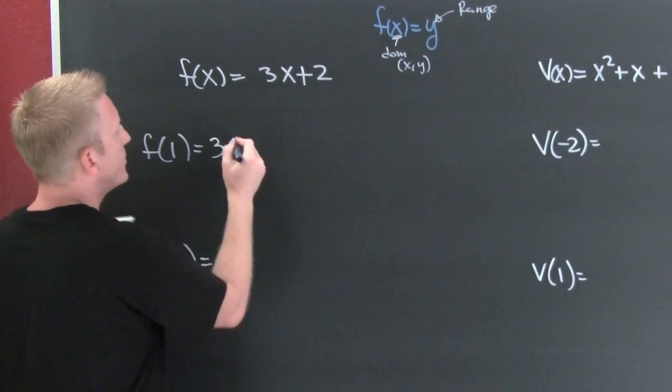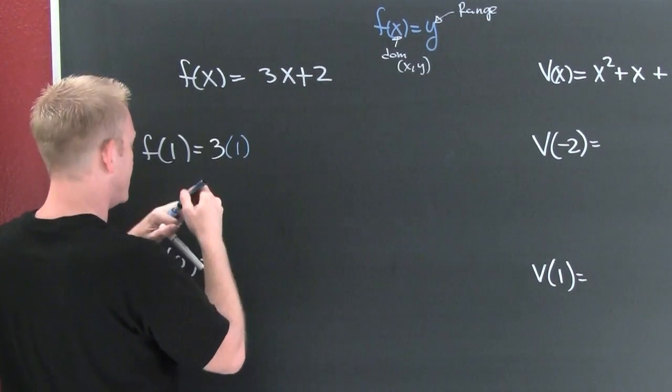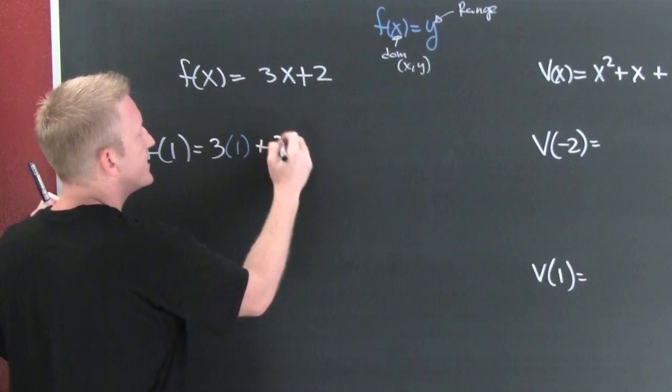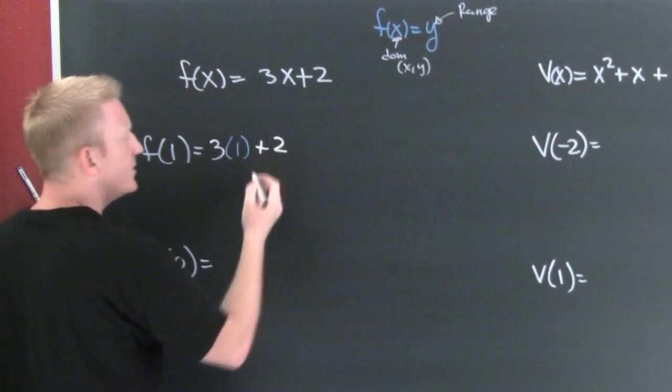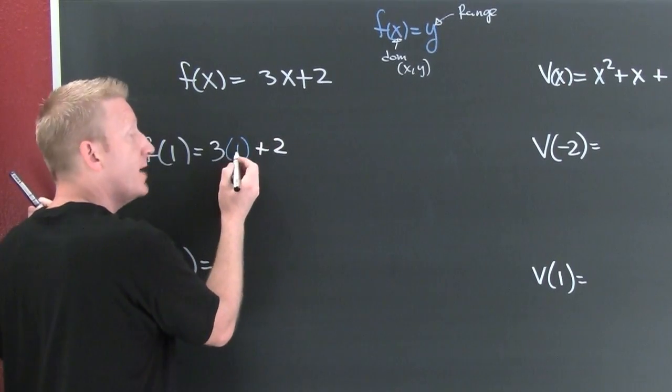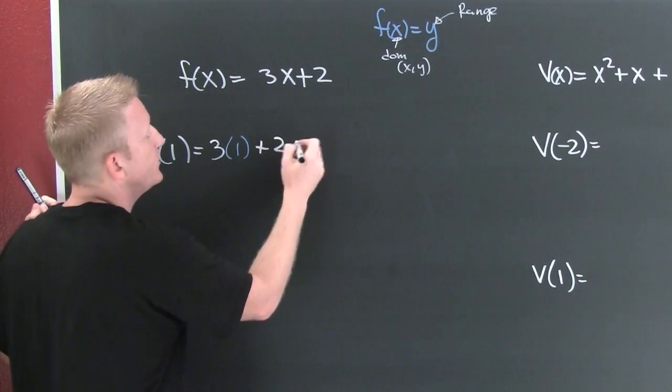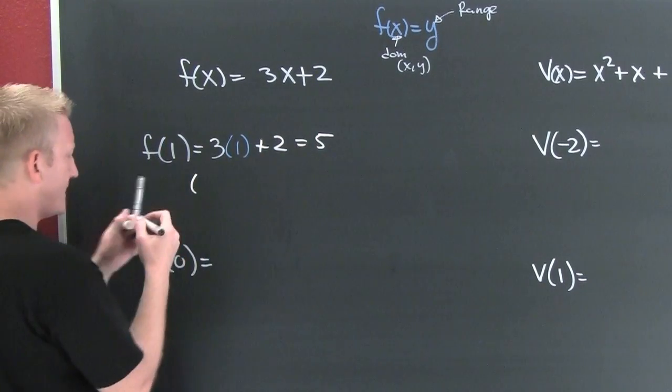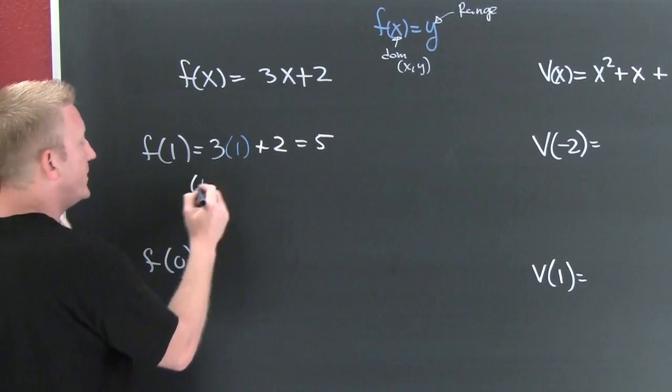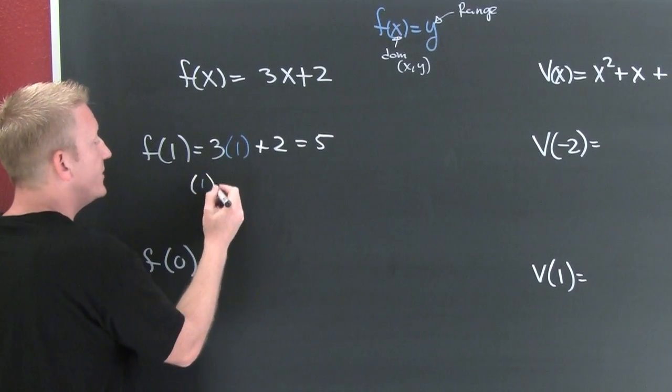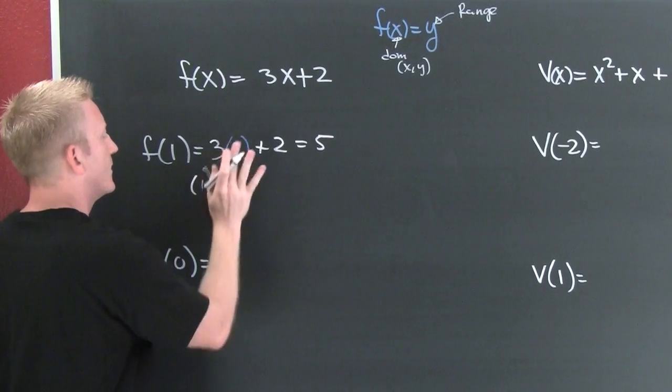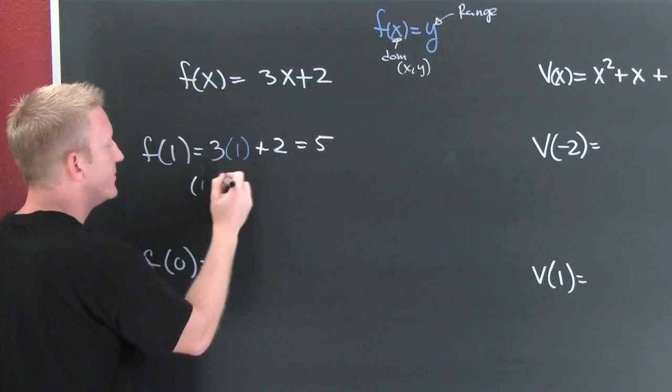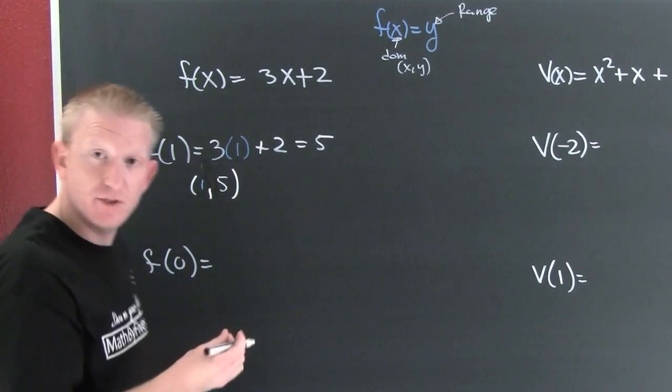Seeing x up here, I'm gonna put a 1 and use parentheses. 3(1) + 2. 3 times 1 is 3 plus 2 is 5. So what was my x value? My x value was 1. What was my y value? My y value was 5, so I have an ordered pair (1,5).